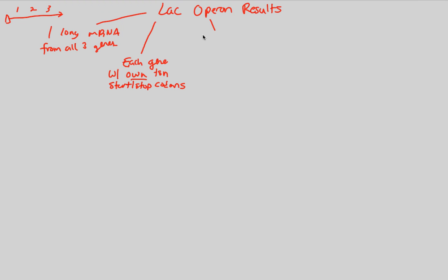Because we have individual start and stop codons between each gene, the end result is that three distinct and unique proteins form after translation. These proteins are also known as enzymes, and these enzymes are present because we detected lactose in the environment — allolactose induced their encoding into the mRNA molecule, and thus transcription happened.